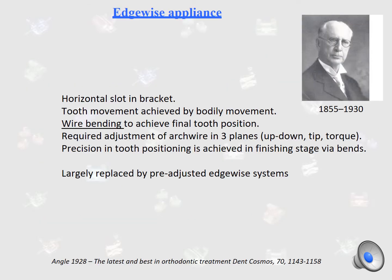Edgewise appliances use a horizontal slot in the bracket. Tooth movement is achieved by bodily movement, and it uses a lot of wire bending to achieve final tooth position. It requires adjustment of the archwire in three planes: up and down, tip, and torque. Precision in tooth positioning is achieved in the finishing stage via bends. This edgewise appliance has been largely replaced by the pre-adjusted edgewise system, also known as straight-wire appliances.